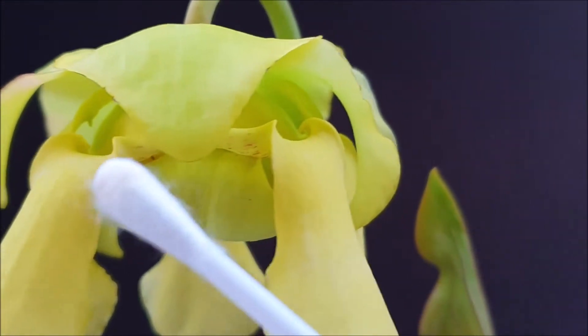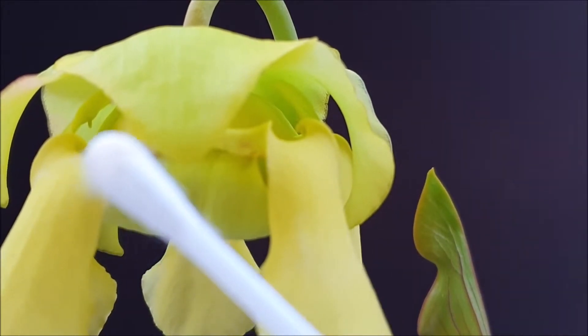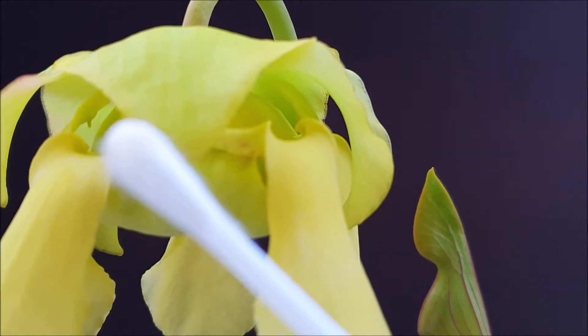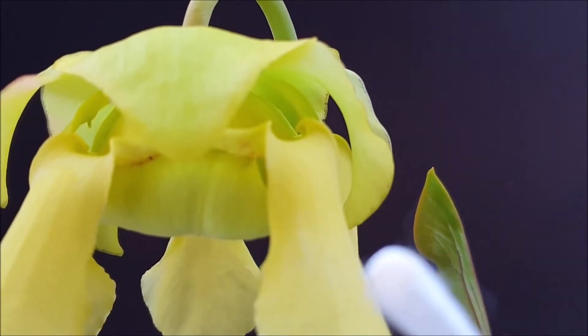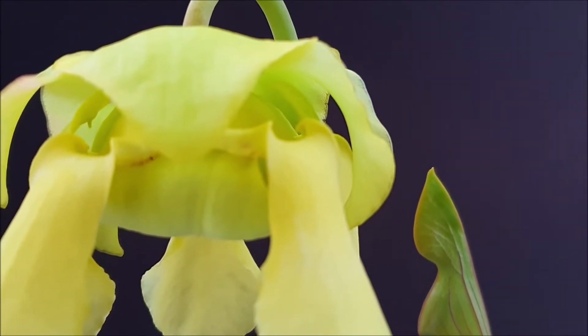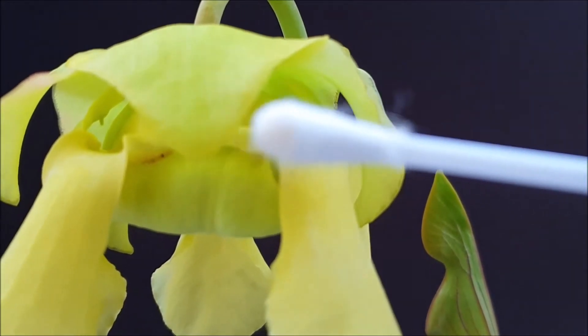And the stigmas are these hook parts. See that hook over there? That's a stigma, or it's part of the female part of the flower. And the stigma needs to receive pollen for the flower to pollinate. And there are five of these stigmas all around the flower.